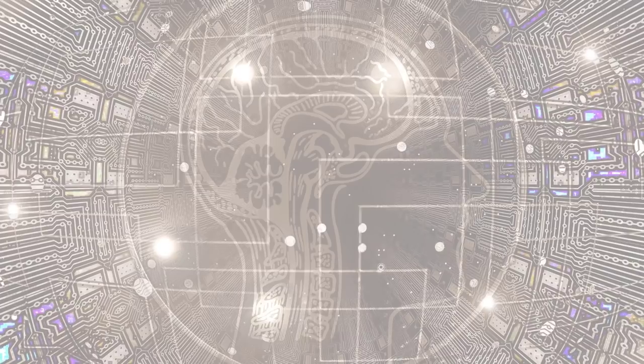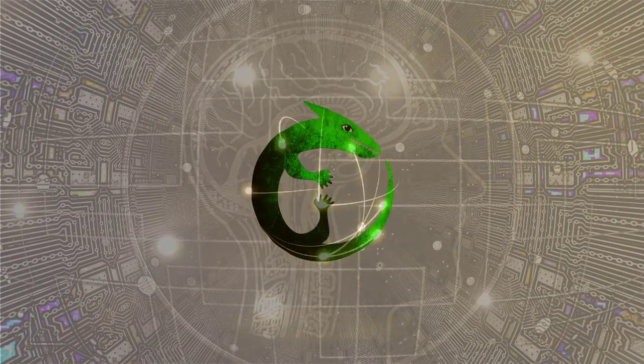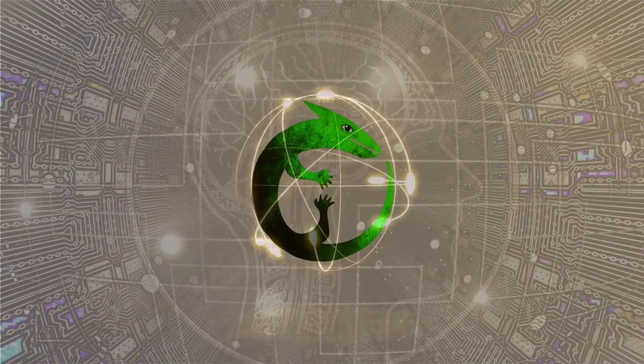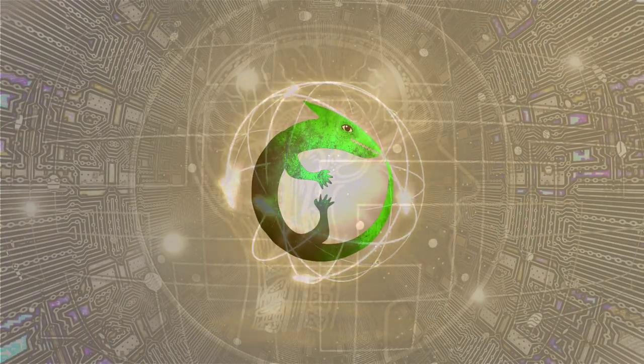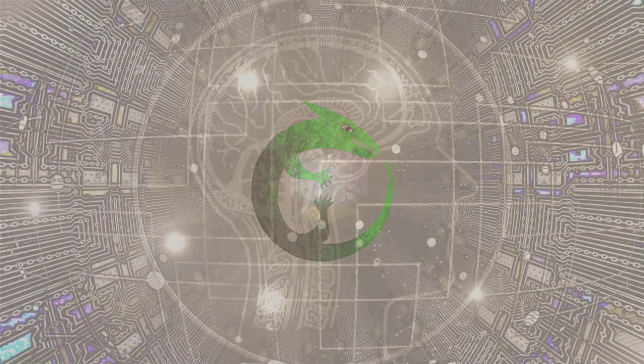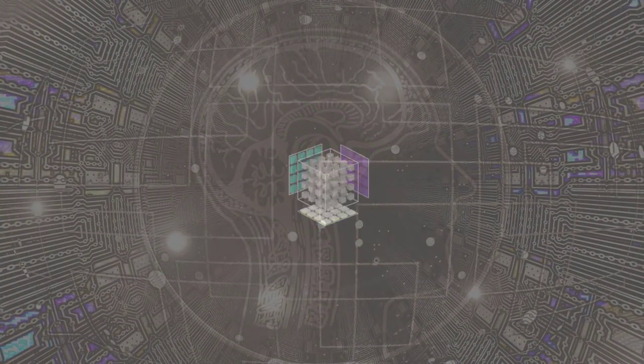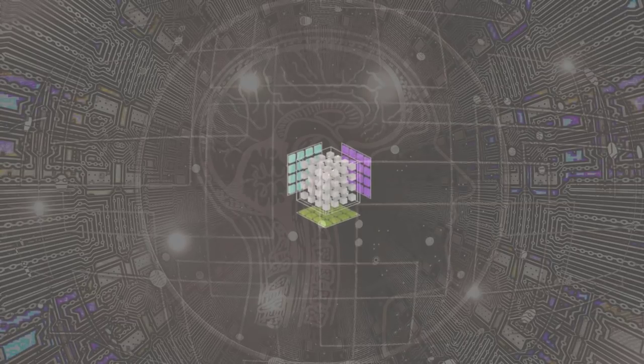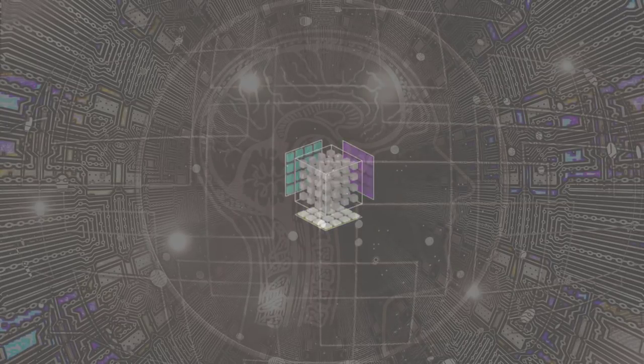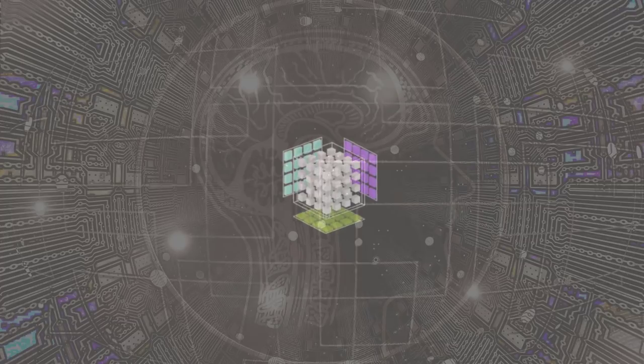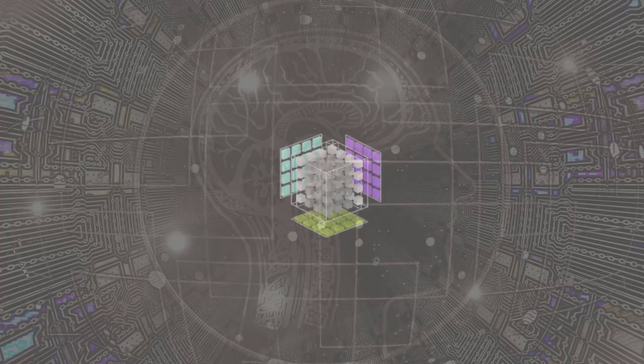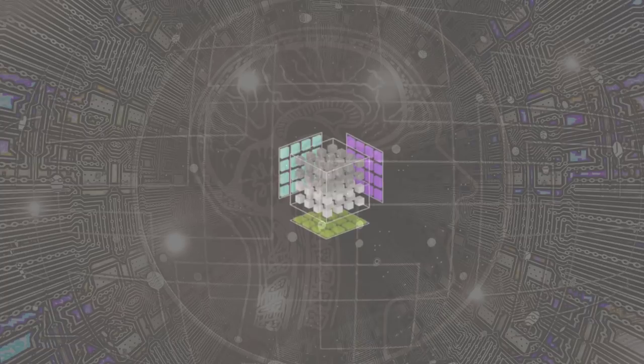Without further ado, let's get started. Tensors are the primary data structures used by neural networks. The inputs, outputs, and transformations within neural networks are all represented using tensors. As a result, neural network programming utilizes them heavily.